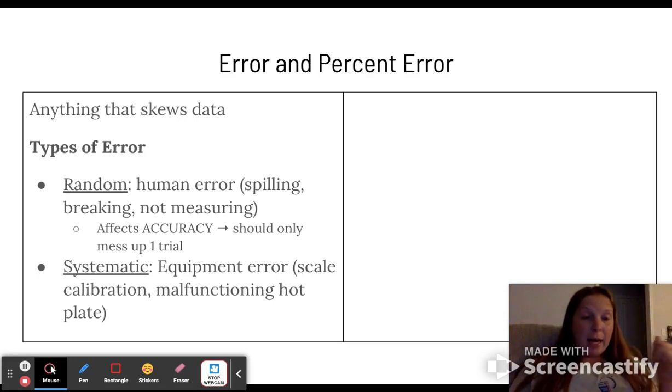The other type is systematic error, and this is an equipment error. So this is something like your scale is calibrated incorrectly, you have a malfunctioning hot plate, your thermometer is not measuring the way that it should. These will affect your precision because it'll cause all your measurements to be high or all your measurements to be low. So they're all going to be off the same way.